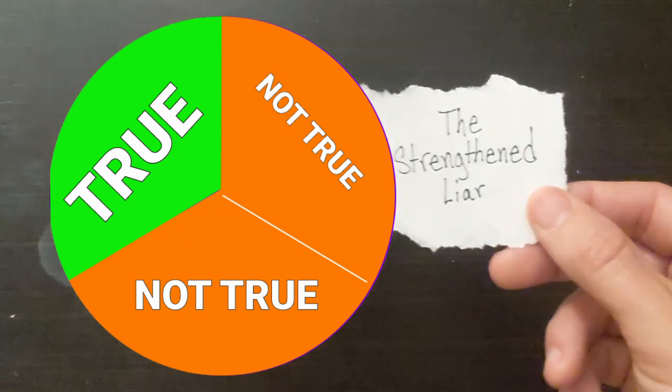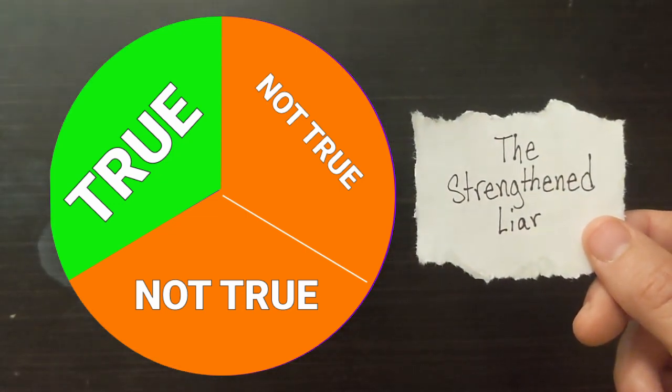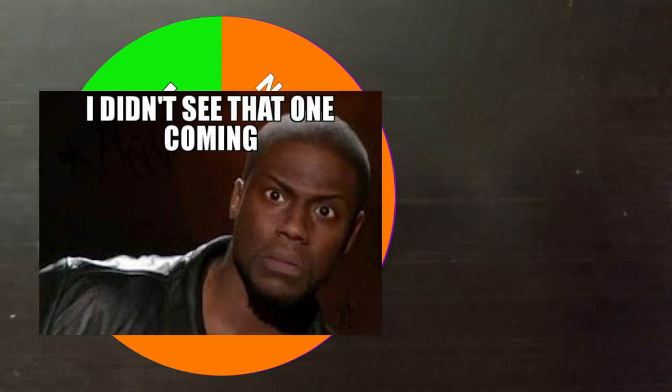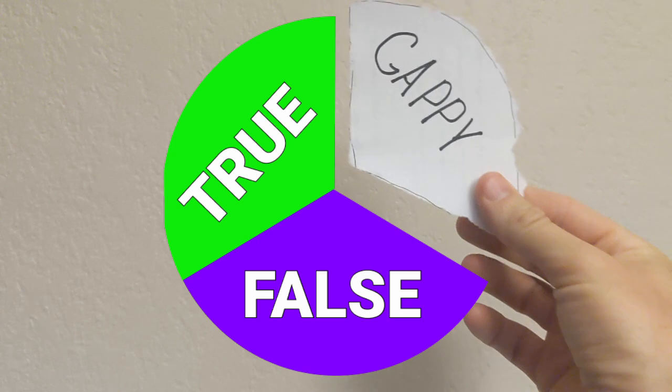This is called the strengthened liar paradox. What you thought was getting you out of it has just reaffirmed the problem. The idea of adding a third category that is neither option is what is known as the gappy solution.